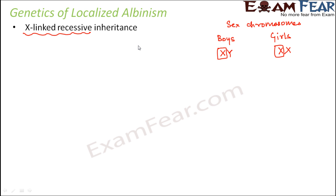Boys do not have a backup copy of the X chromosome to protect them. Because this is a recessive inheritance, the disease occurs only when you have two copies of the defective gene. In the case of boys, if they have even one copy of the defective gene — and boys have only one X chromosome — they will have the disease.